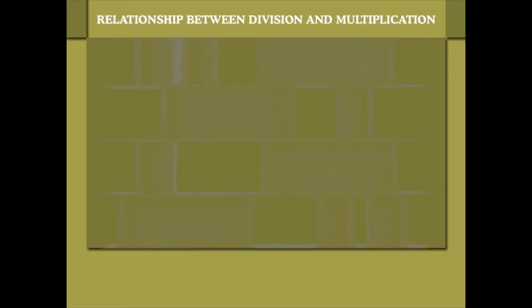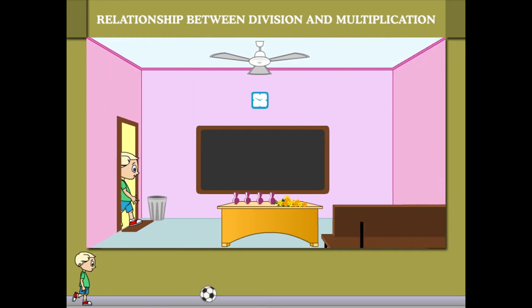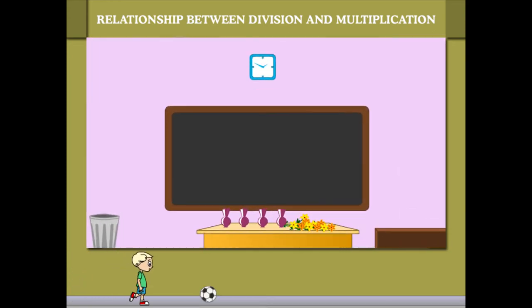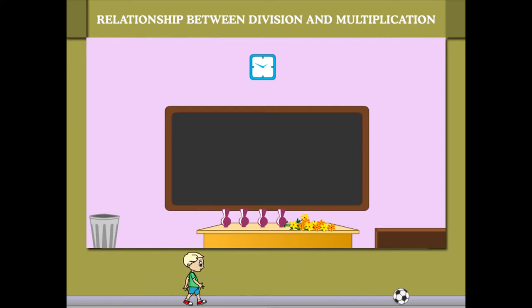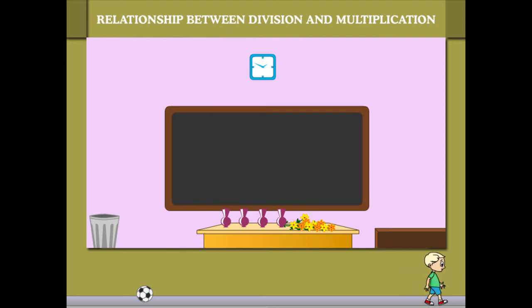This video is about the relationship between division and multiplication. Bunty is in the classroom with four vases and a bunch of flowers. His question is: how much is 12 divided by 4? He places one flower in each of the vases one by one, then counts the flowers in each vase to solve the problem.